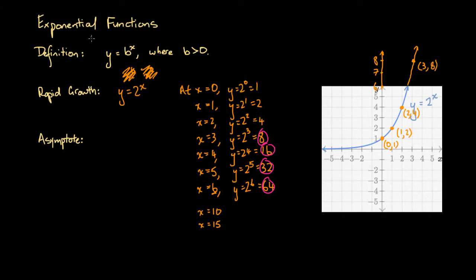That's why we particularly talk about exponential functions or exponential growth as being associated with rapid growth. On the right-hand side, very small increases in x — say from 2 to 3, or 3 to 4, or 4 to 5 — can be associated with increases of 4, 8, 16, or 32 units for y. Very small increases in x are associated with large increases in y. That's what we mean by rapid growth.